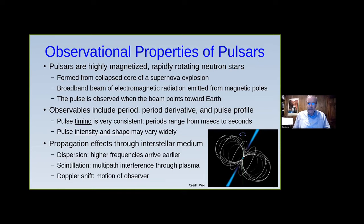Observables include the period of the pulse, the period derivative which is the rate of change, and the profile. Pulse timing is very consistent — they make great clocks. The period can range from just a few milliseconds up to dozens of seconds. Pulse intensity and shape can vary widely due to propagation through the interstellar medium, dispersion, scintillation — the multipath interference through the plasma — and Doppler shift.